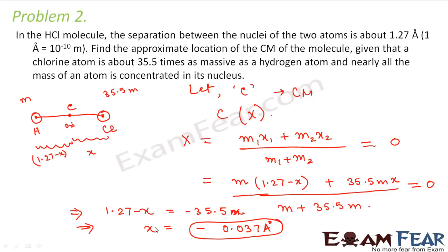So this is the value of X — the distance of chlorine from the center of mass. Therefore we can say that the center of mass lies at a distance of 0.037 angstrom from the chlorine atom. What we did was: we assumed the center of mass is at a certain position and set it as the origin, measured distances of both atoms from that origin, set the center of mass coordinate equal to 0, and solved for X to find the approximate location of the center of mass.